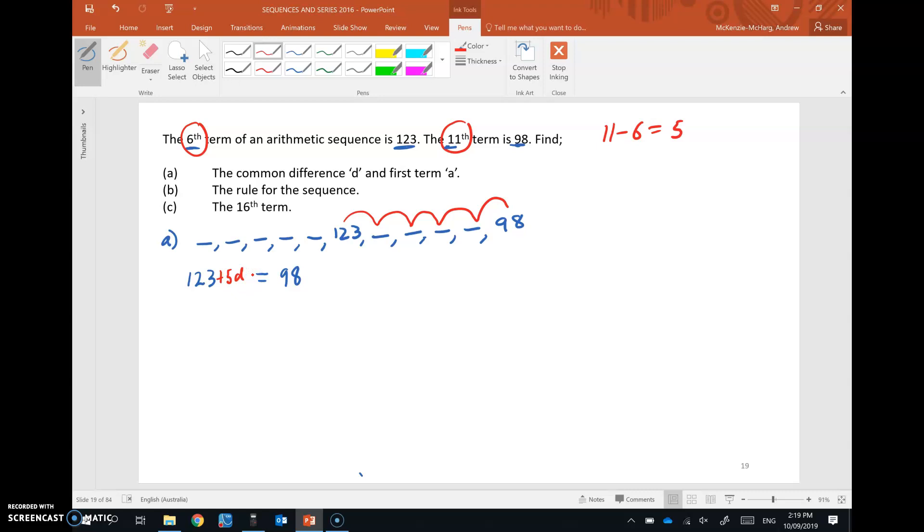Right, so go ahead then and find that common difference. Then I'll do it. So D equals 98 take 123 on 5. This gives us negative 25 on 5. And our common difference of negative 5. We're going down by 5s.